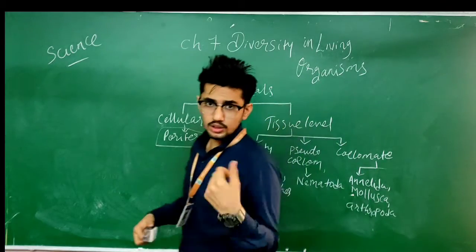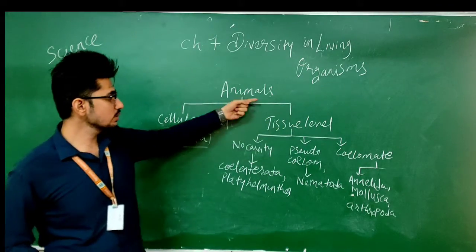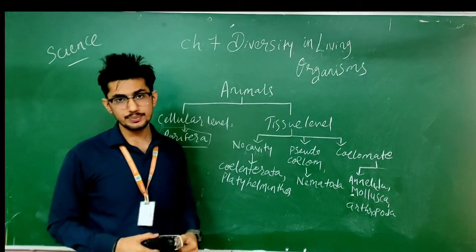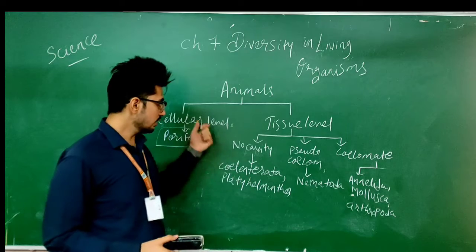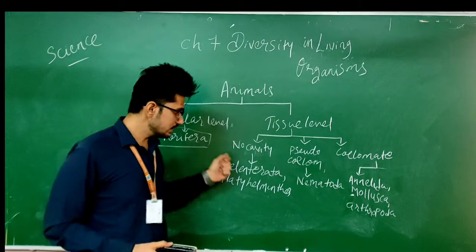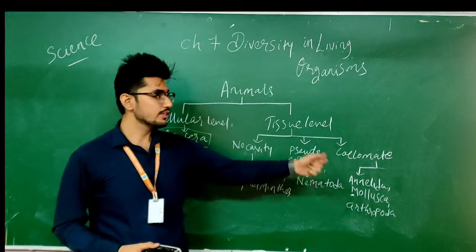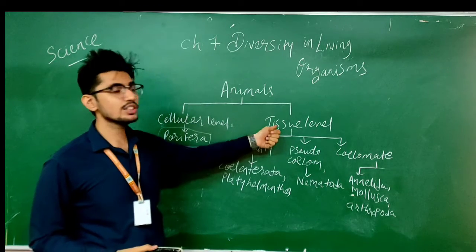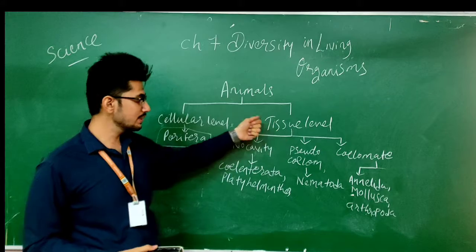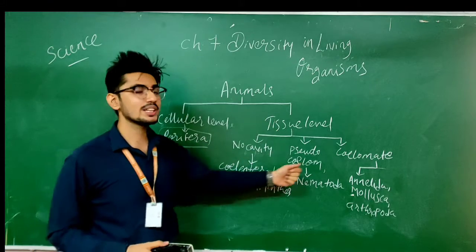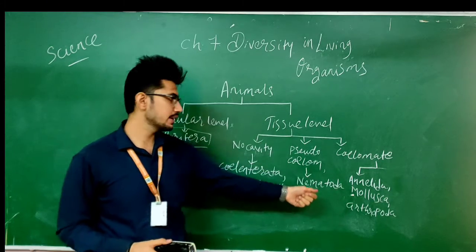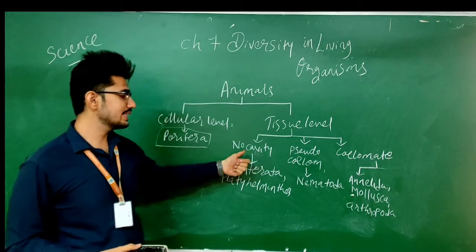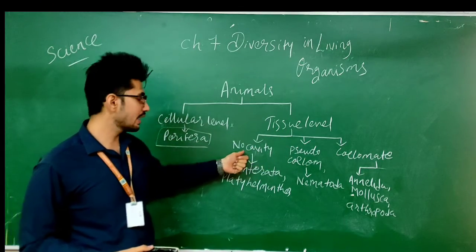When we move on to the second level of classification, we can see the tissue level. So whatever we are going to see from here, we are going to have differentiation up to the tissue level. The tissue level is the basic level, with no cavity. Cavity means hollow space.